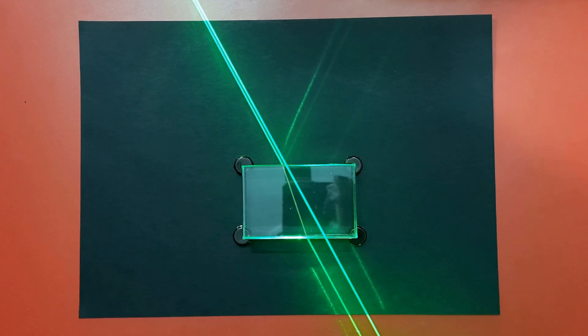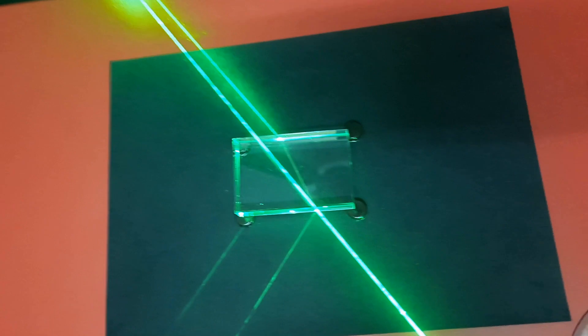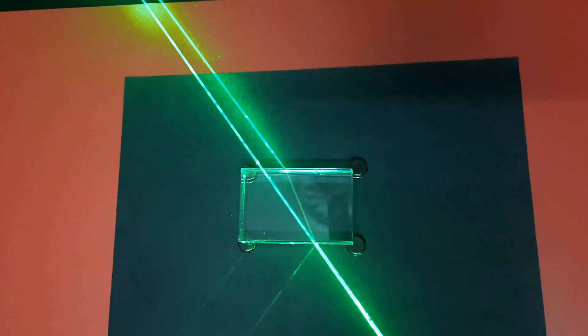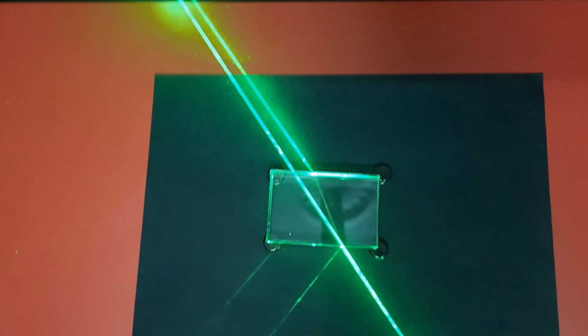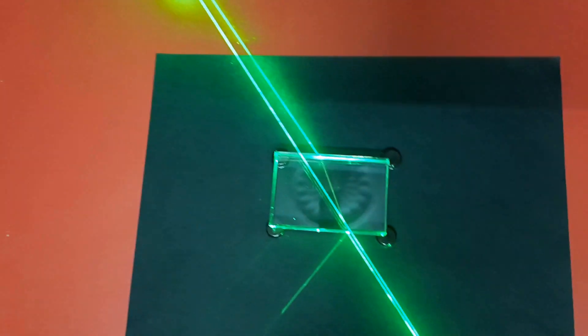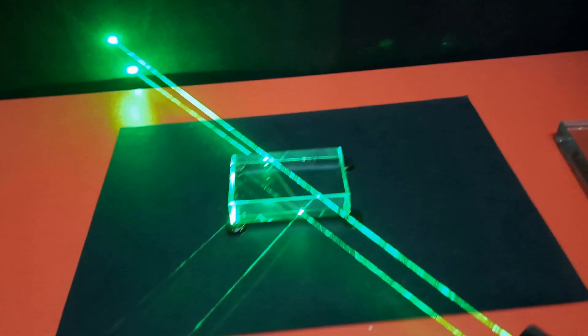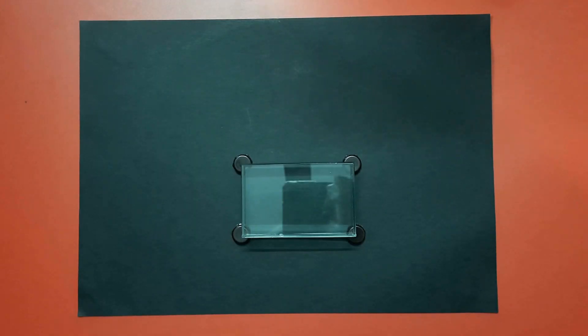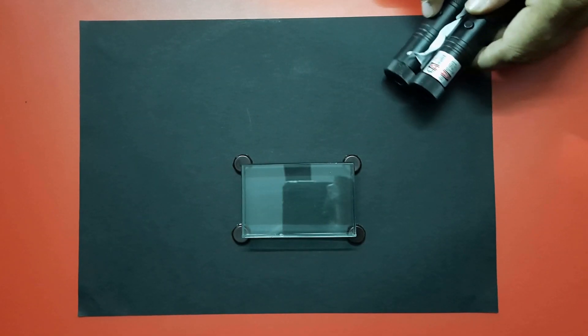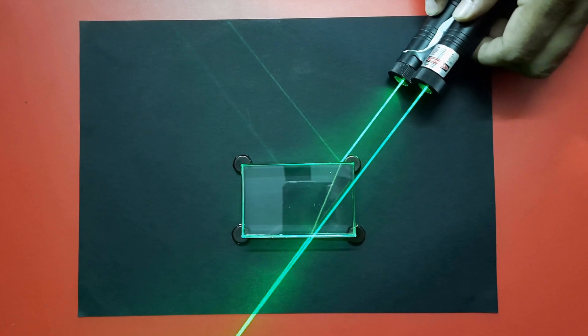When observed from a different angle you can see two laser beams—one is passing through air and the other through glass slab. As the opposite sides of the glass slab are parallel, you can easily prove through your knowledge of geometry that emergent beam should be parallel to the incident beam.